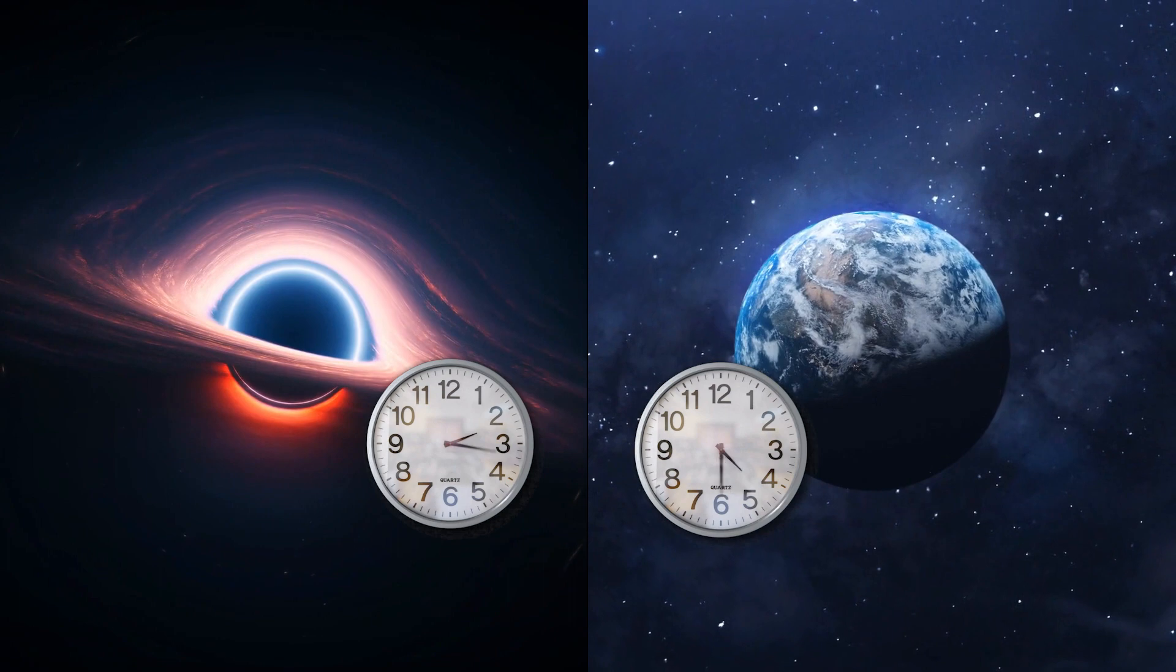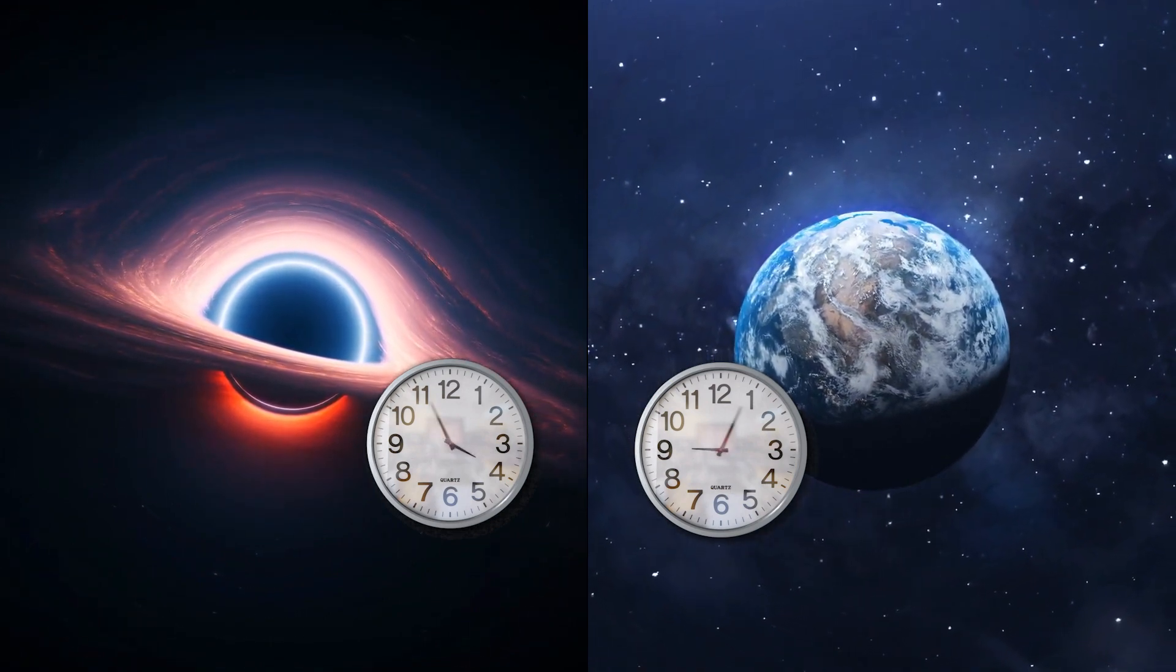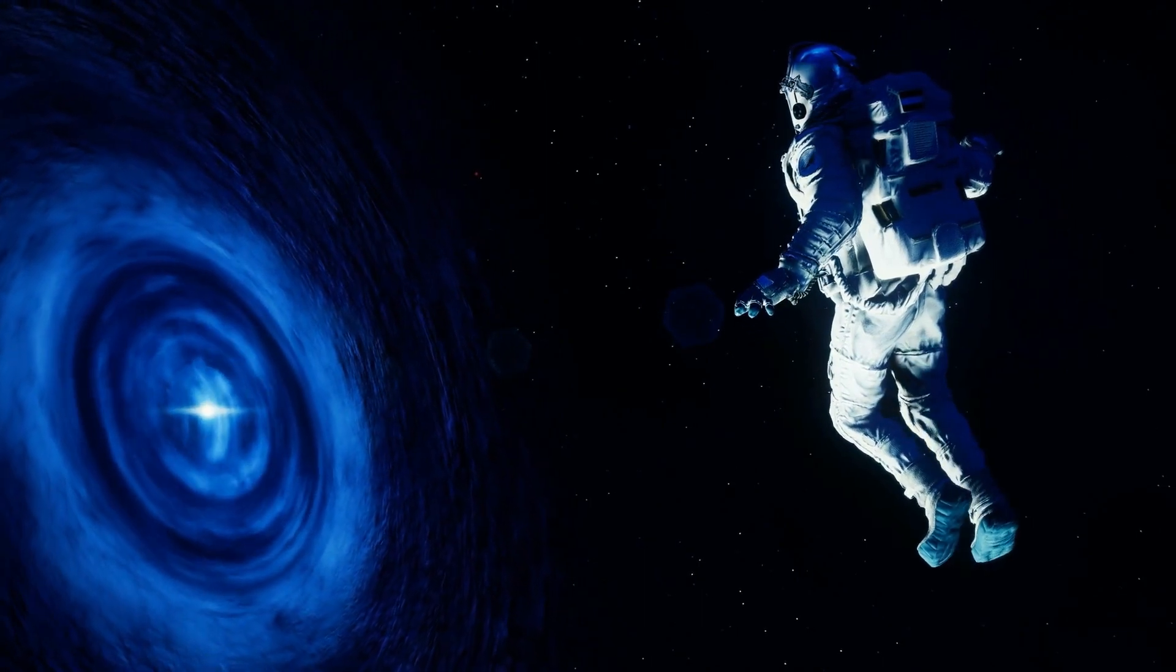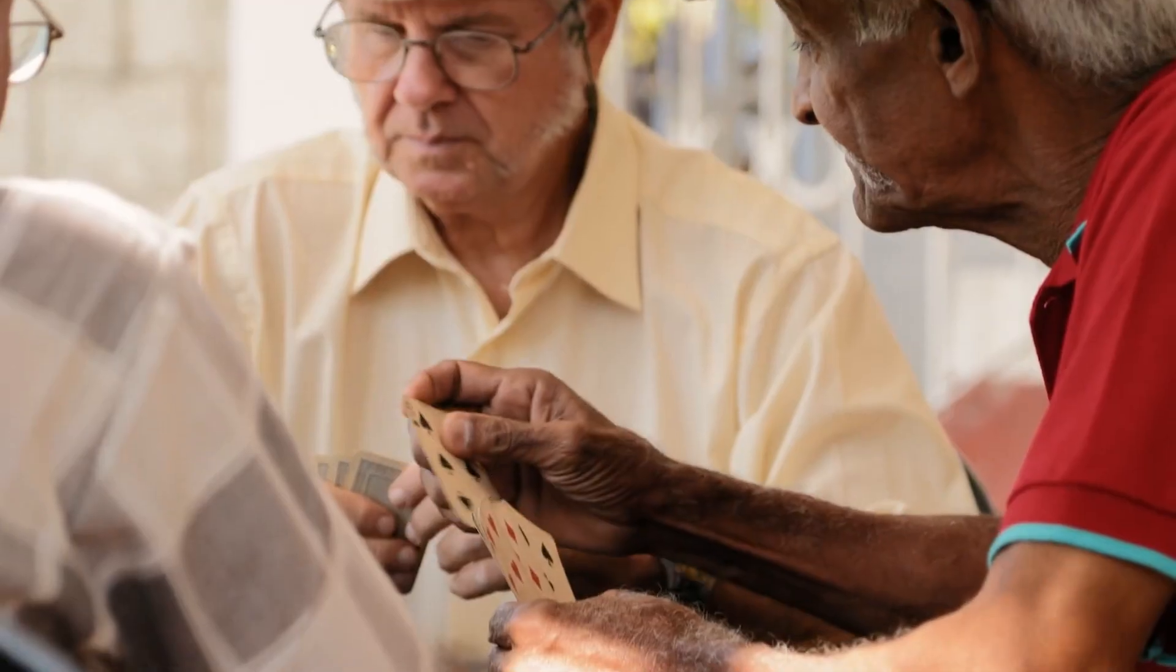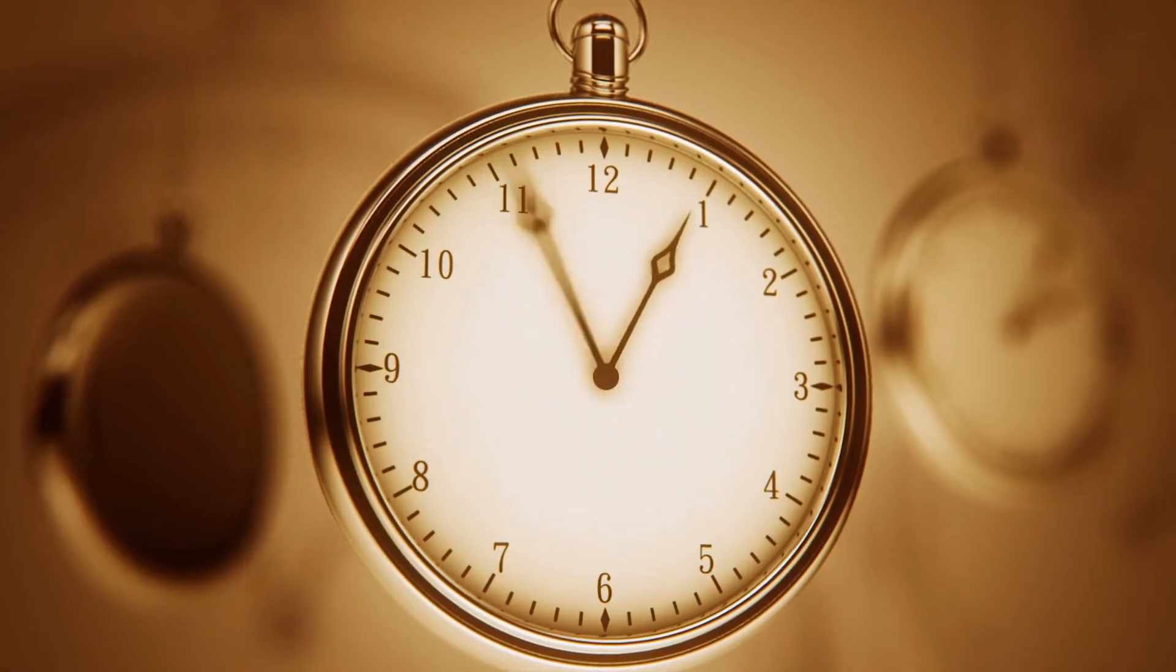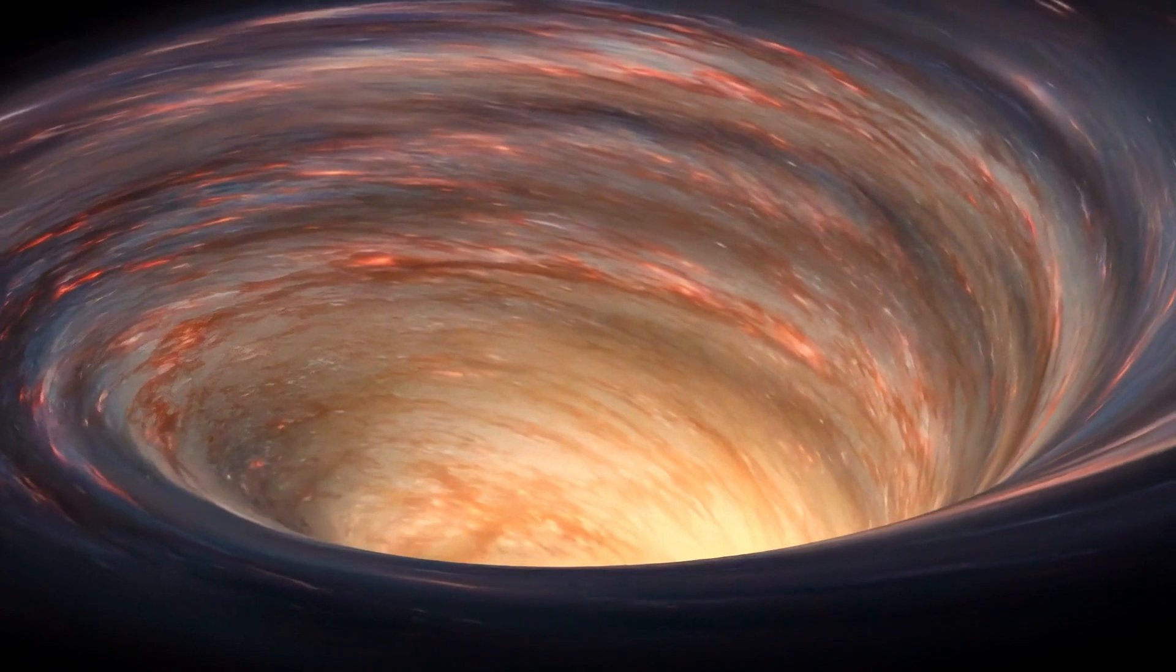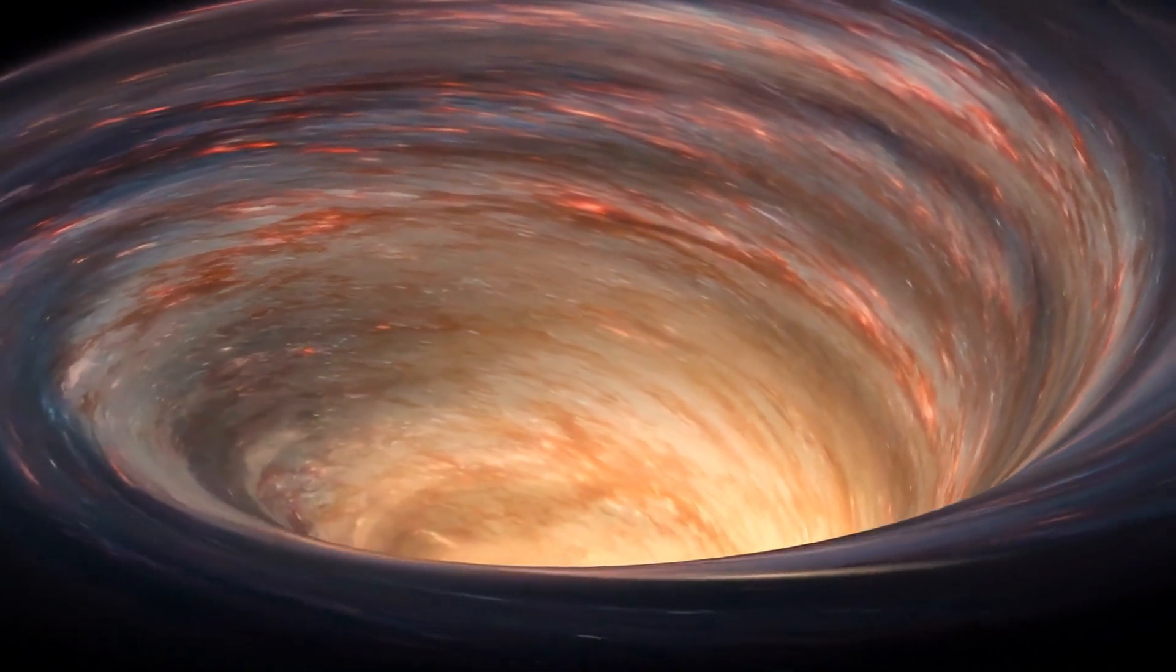This edge is called the event horizon. Now the time travel part: black holes mess with time, not just space. Picture two clocks, one near a black hole, one here. The space clock goes really slow. If you were near a black hole then returned, everyone here would be older. It's like you skipped ahead in time.